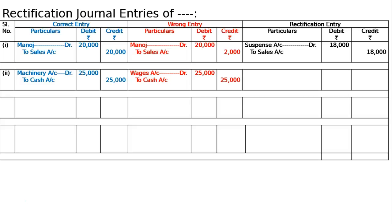Machinery account should be debited — it should come in the debit. Since wages account was debited by mistake, if we credit the wages account this will nullify the effect. The narration is noted accordingly.